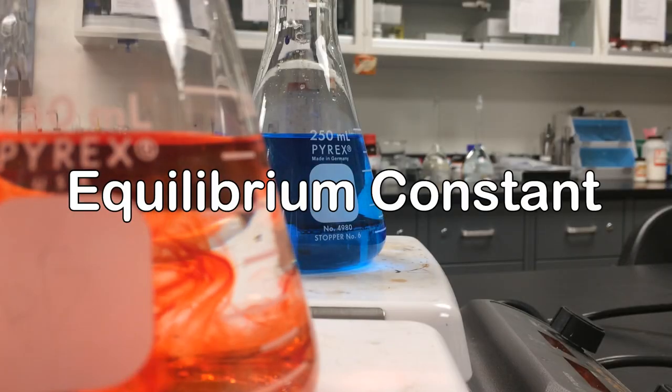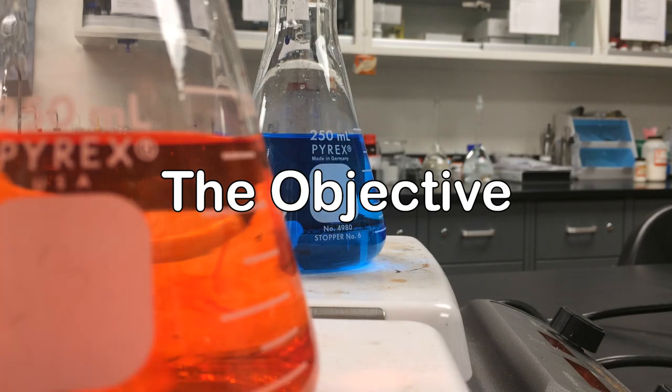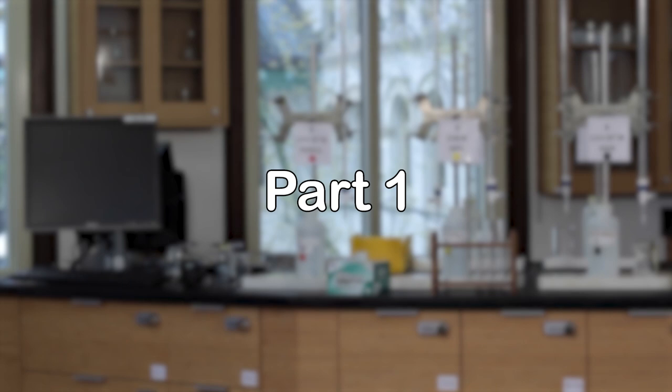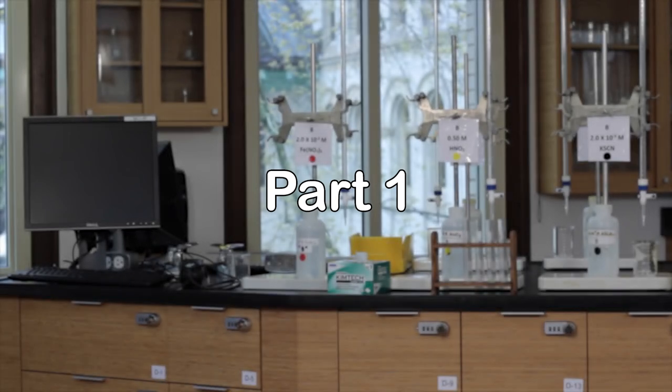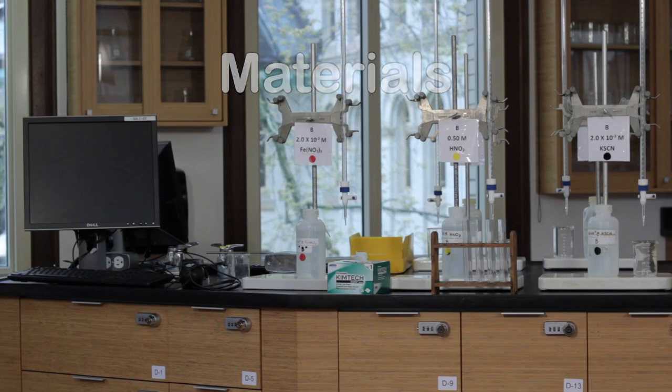Chemical equilibrium one: the equilibrium constant. This experiment uses the technique of spectrophotometry to determine the equilibrium constant for the reaction of iron ions and thiocyanate ions. This experiment contains two parts. Part one: preparation of the calibration curve.